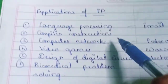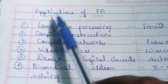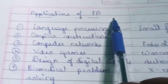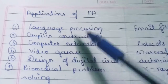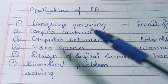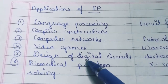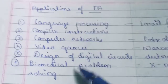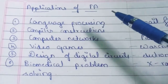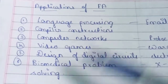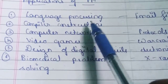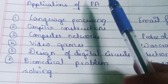Today we will be discussing the applications of finite automata — the areas of its usage. The six major fields are: language processing, compiler construction, computer networks, video games, design of digital circuits, and biomedical problem-solving. There are still a few more fields where finite automata is used, but these six are the major ones.